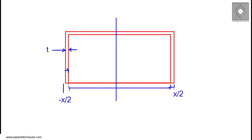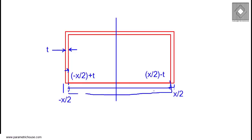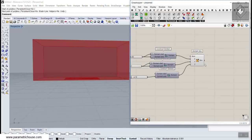For the Z direction, it's going to be Z minus T. To make this subtraction work, we need to make the inner box a little bigger in one direction. So I'm going to add another Domain Box. Let's assume the thickness is something like 2.25. We can go to Math and use an Expression component. Let me name the variable X and name the thickness T. We can type the formula: minus X divided by 2 plus T — no syntax errors. That's the start; and X divided by 2 minus T for the end.